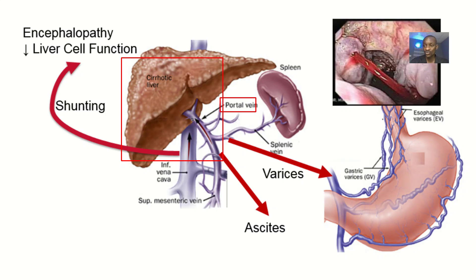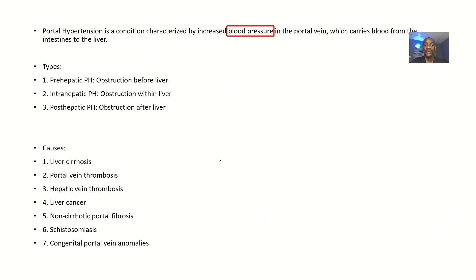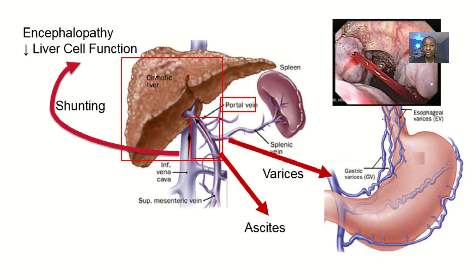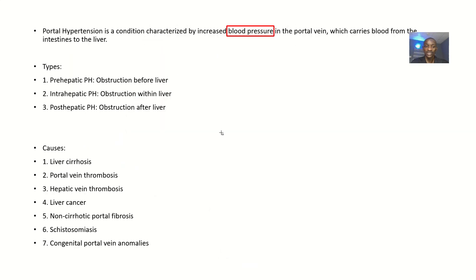The types of portal hypertension are: pre-hepatic, meaning obstruction before the liver; intra-hepatic, meaning obstruction of the portal vein within the liver; and post-hepatic, meaning obstruction after the liver.